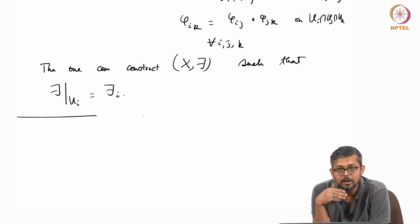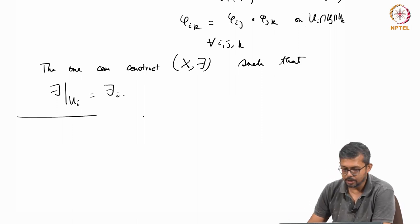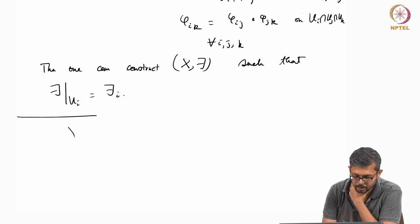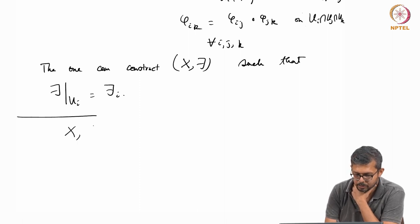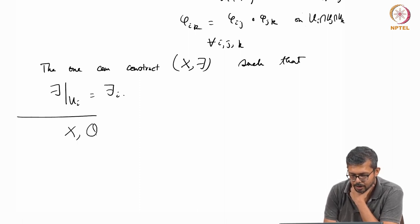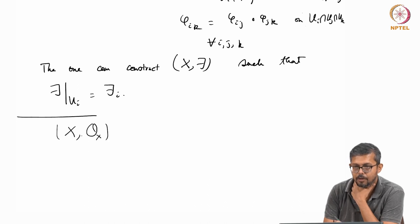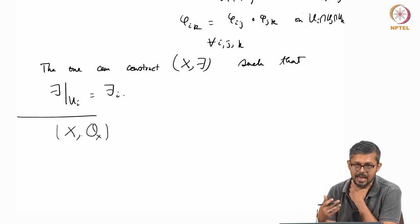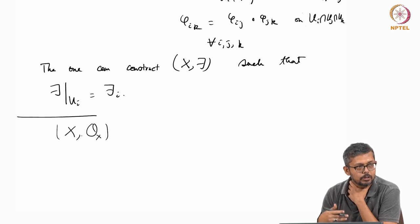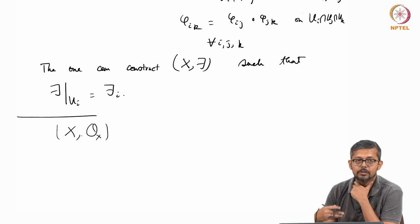We have seen sheaves of Abelian groups, but sometimes if you have a topological space, you can define what is called a sheaf of regular functions. This is a K-algebra, and once you have a K-algebra, you can define a sheaf of OX modules.